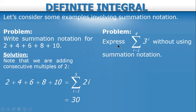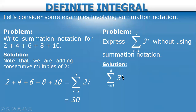Another example: express the sum of 3 raised to i from i equals 1 to 4, without using summation notation. We substitute the values of i from 1 to 4: 3¹ + 3² + 3³ + 3⁴. The answer is 120.